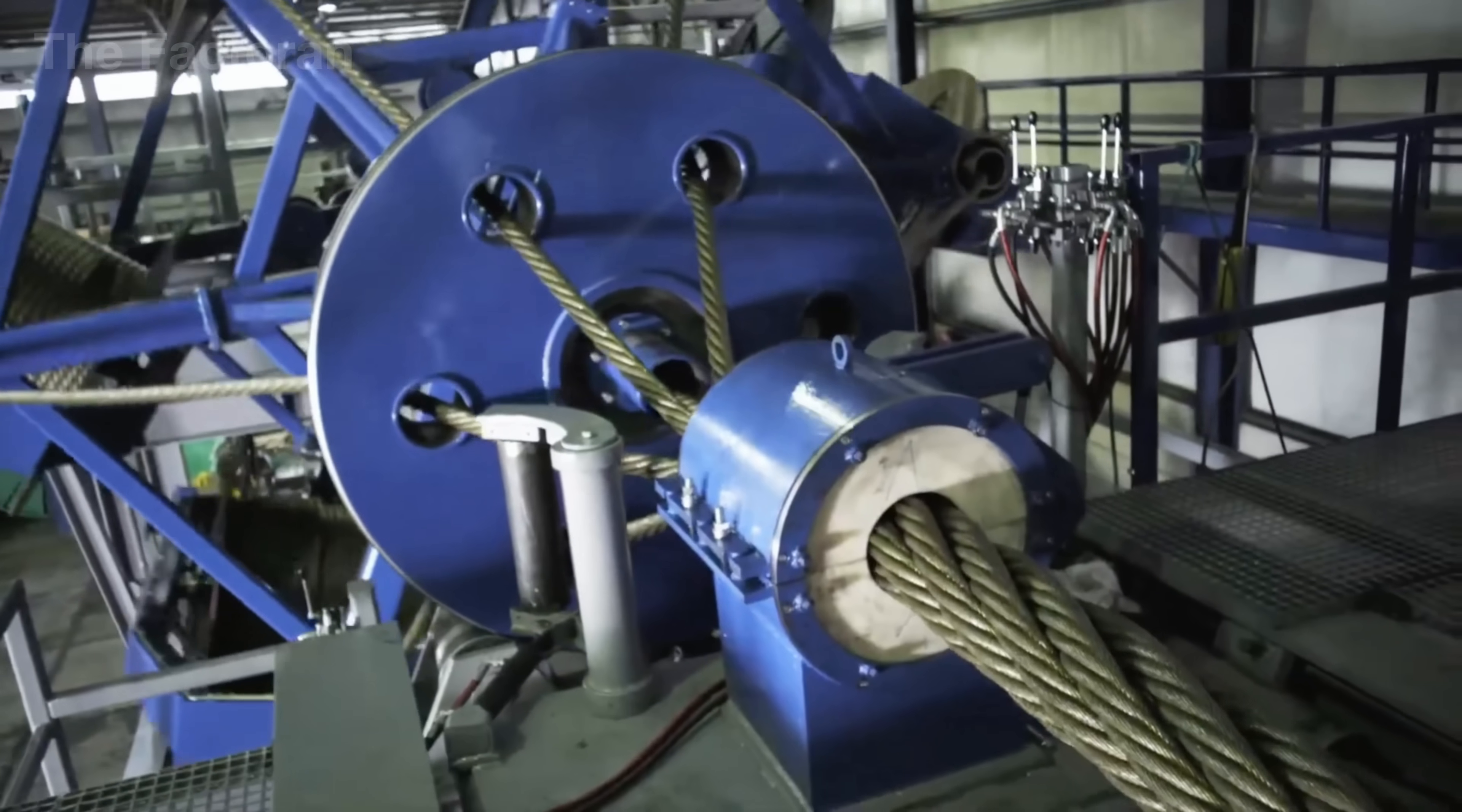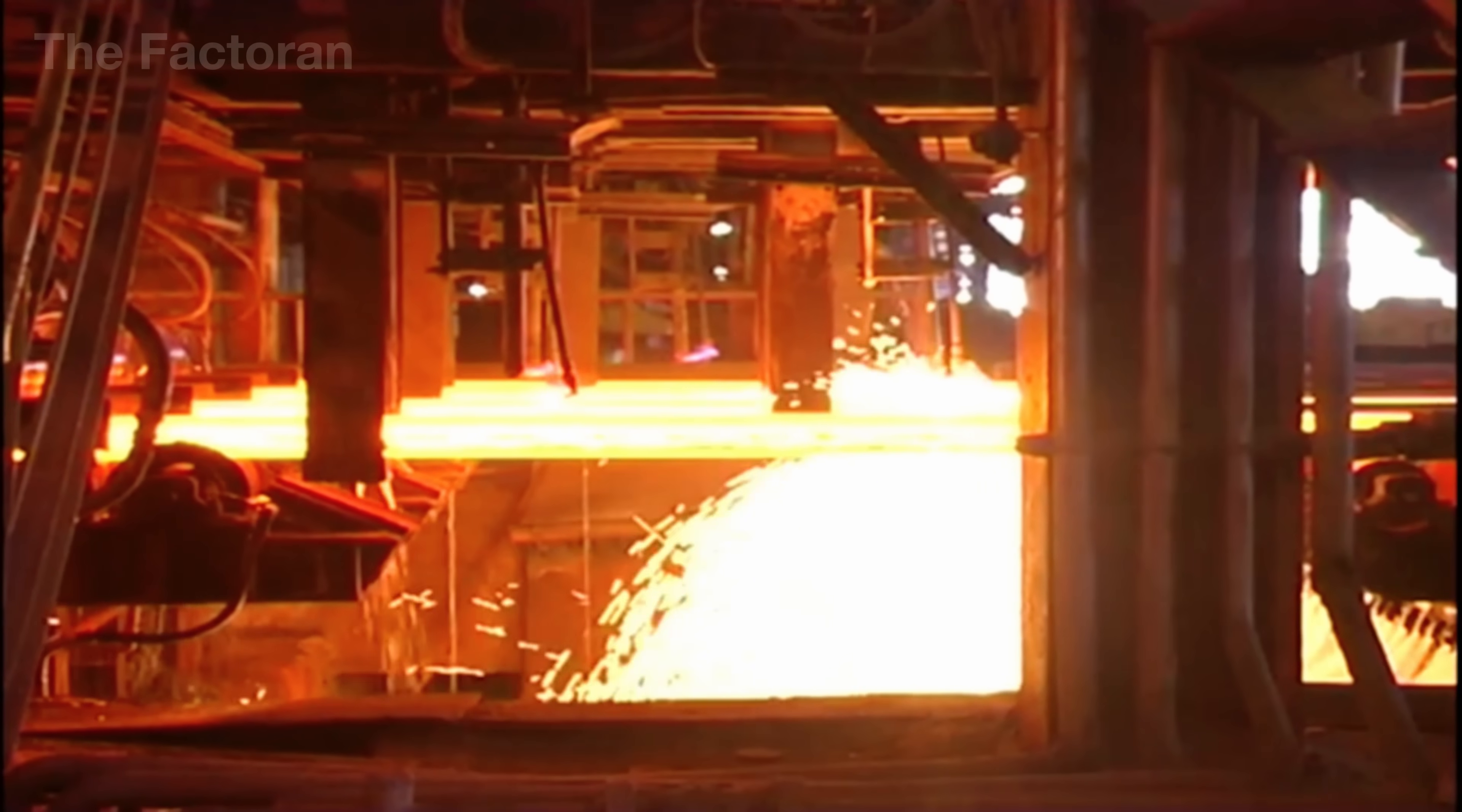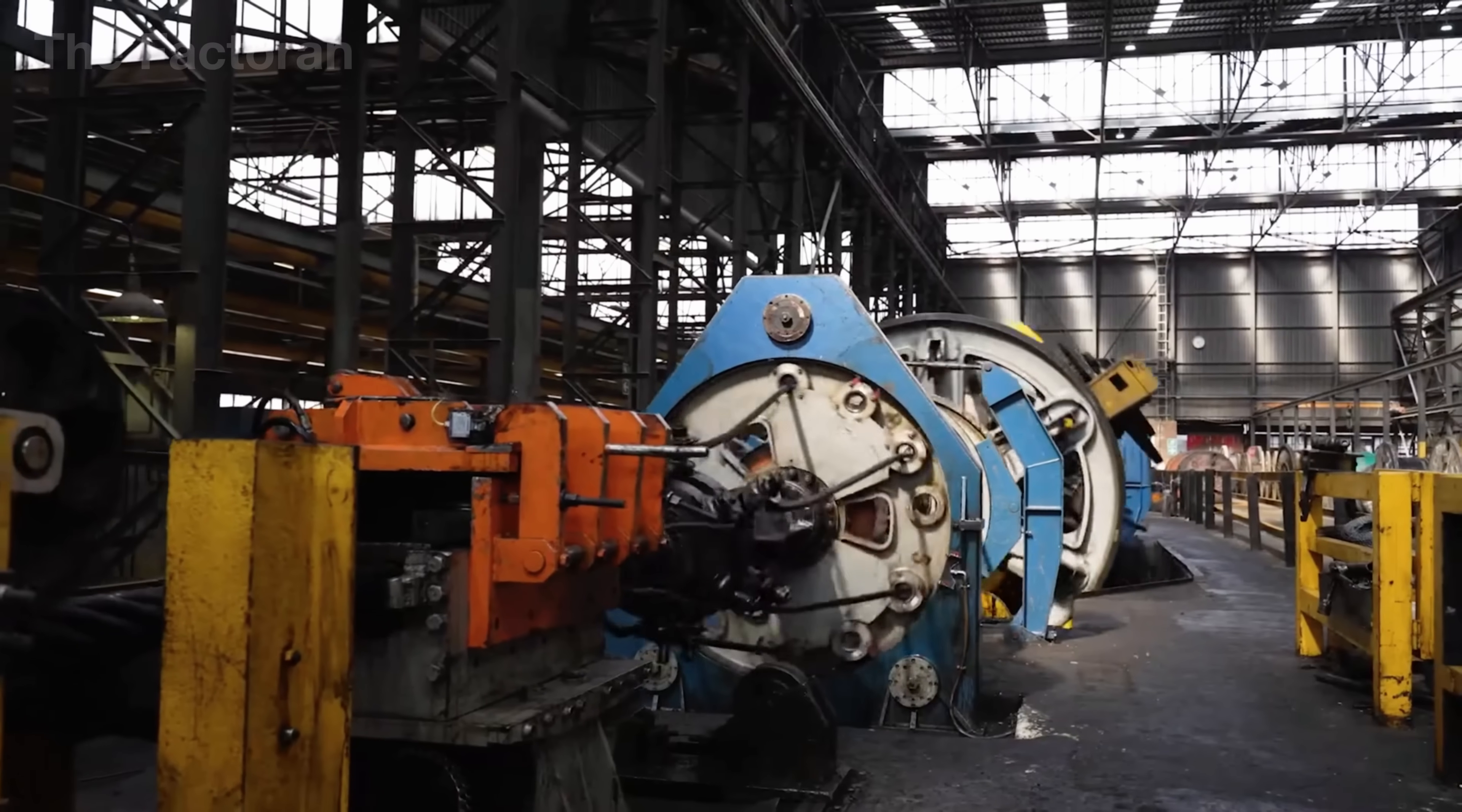From a raw block of metal to a high-strength steel cable, every step stands as proof of precision and technological power. Behind it lies a complex system where even the smallest detail carries critical importance. If you'd like to discover more fascinating manufacturing processes like this, make sure to like the video, tell us in the comments which stage impressed you the most, and subscribe to the channel so you won't miss our upcoming videos.